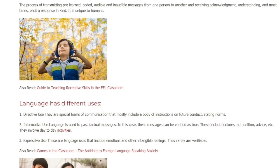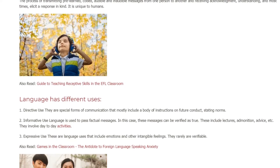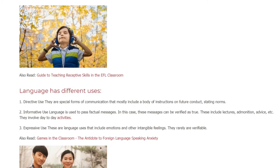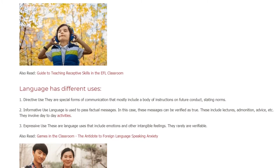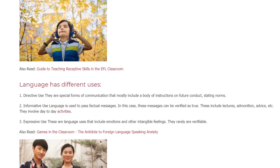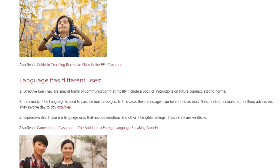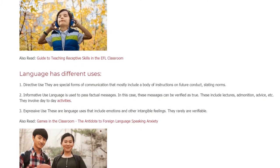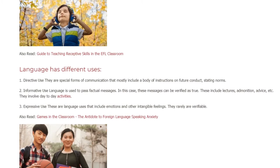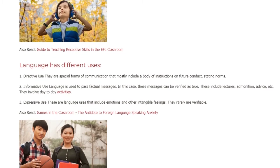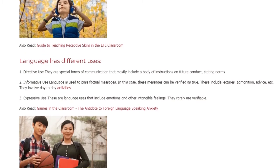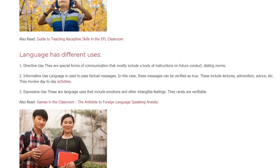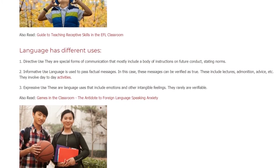Language has different uses. First, directive use: these are special forms of communication that mostly include a body of instructions on future conduct, stating norms. Second, informative use: language is used to pass factual messages. In this case, these messages can be verified as true. These include lectures, admonition, advice, etc.